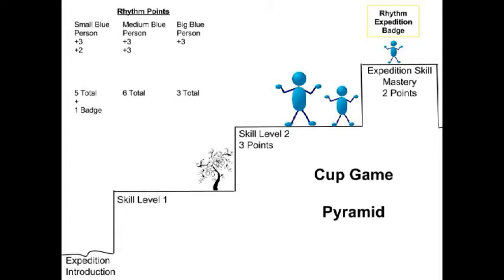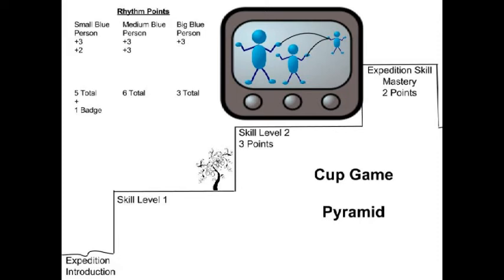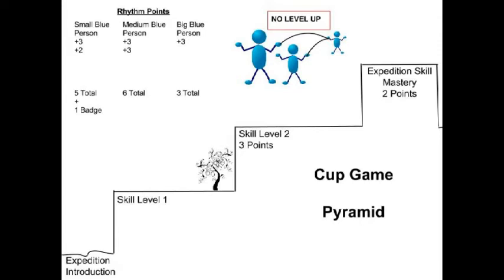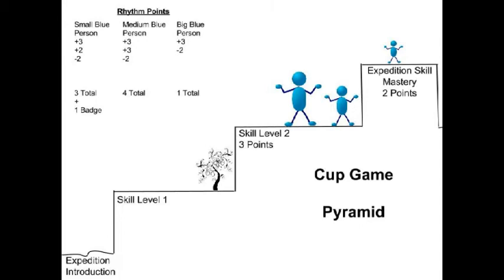So large and medium blue persons ask for her help to reach level 3 also, but they don't practice enough and make the video before they are ready. They submit it to the rhythm experts and they fail to level up. That means big and medium blue persons lose two points and small blue person also loses two points. They realize they need to practice harder and work together more so they don't lose more points.